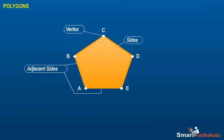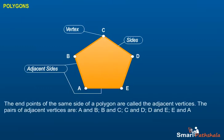The pairs of adjacent vertices are: A and B, B and C, C and D, D and E, E and A.